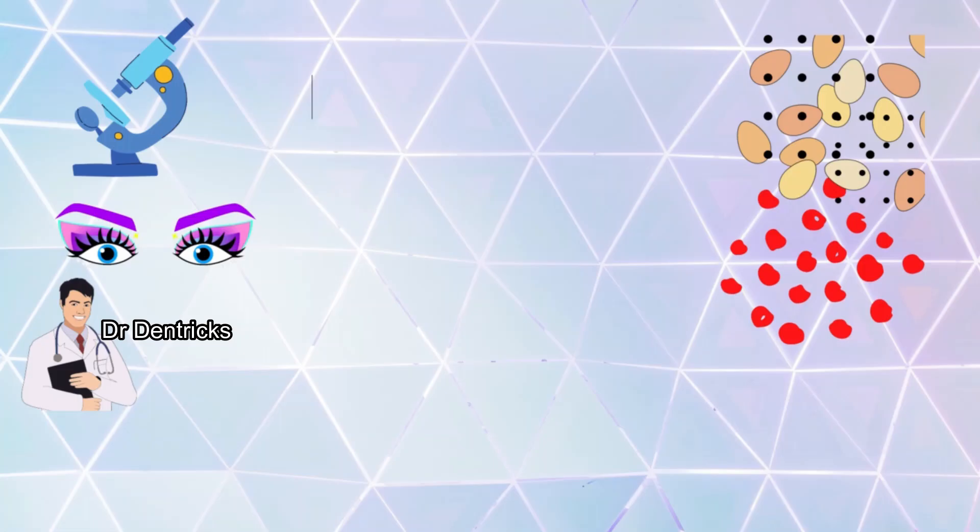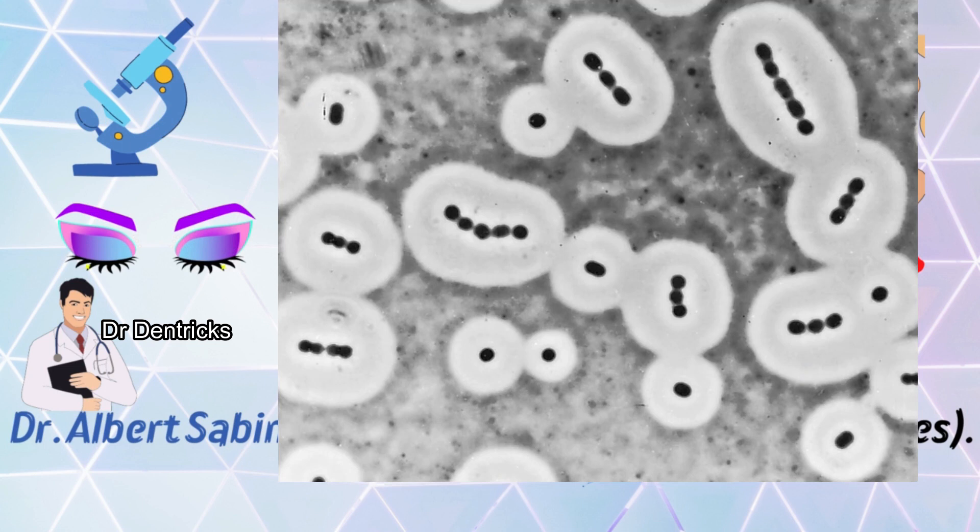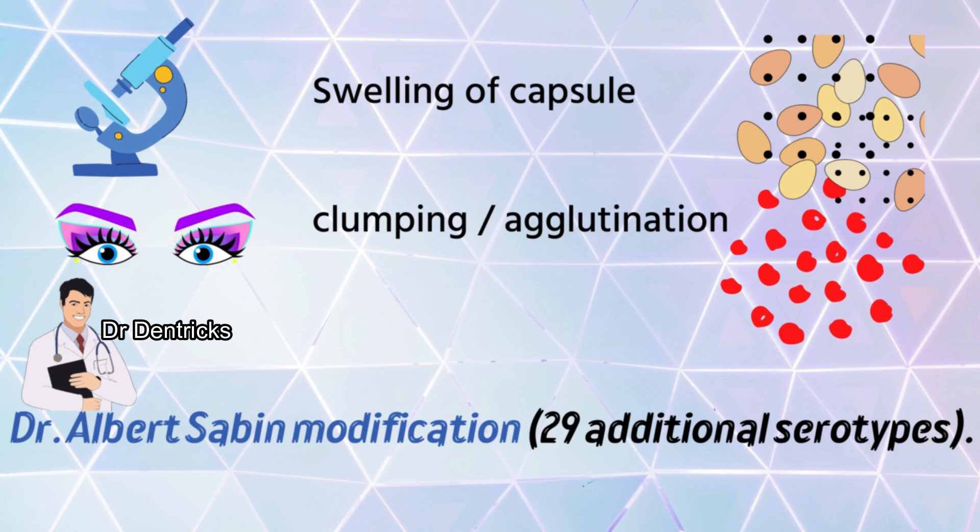Microscopically, when looking at the reaction, it appears as a swollen or imbibed capsule, and grossly with the naked eye it will be seen as clumping. As a modification to Neufeld's technique, Dr. Albert Sabin introduced a technique to recognize 29 additional bacterial serotypes.